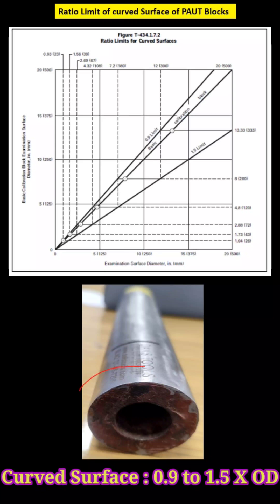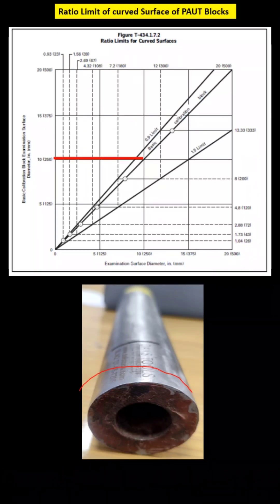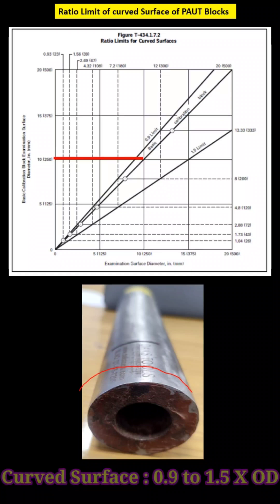For example, this is the curved surface. If you are using a 250 mm curved surface basic calibration block, we can use the job from 250 times 0.9, which is 225 mm, and the maximum limit will be 1.5 times 250, which is 375 mm.